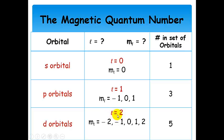For D orbitals, L equals 2. Going from negative L to positive L increasing by 1, the allowed M sub L values are negative 2, negative 1, 0, 1, and 2. Counting those gives 5, so there are five D orbitals in the D subshell. It all comes down to the number of values for M sub L.